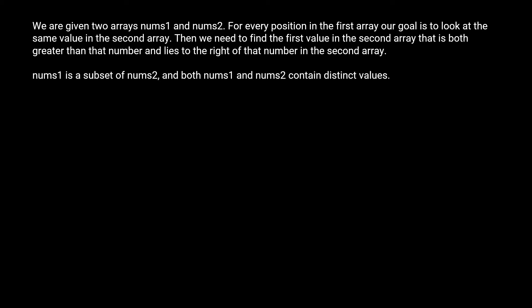Hello everyone. In this video we're going to be covering the next greater element problem. For this problem we're given two arrays, nums1 and nums2. For every position in the first array, our goal is to look at the same value in the second array, then find the first value in the second array that is both greater than that number and lies to the right of that number. Nums1 is guaranteed to be a subset of nums2, and both nums1 and nums2 contain distinct values. Pay attention to these two constraints because they're actually pretty important to the problem.